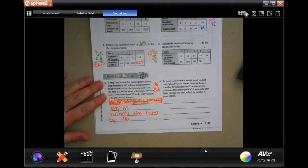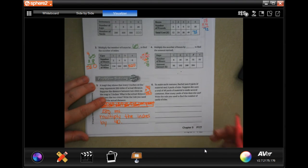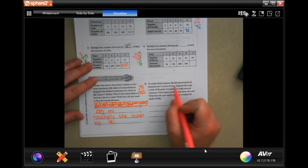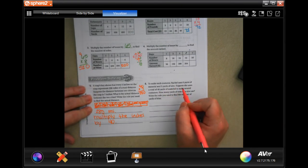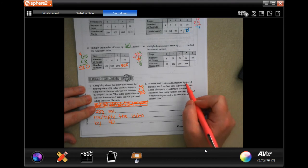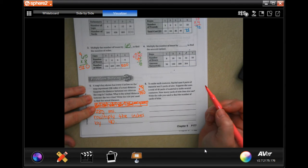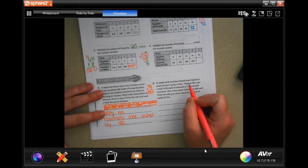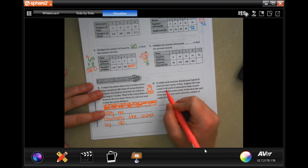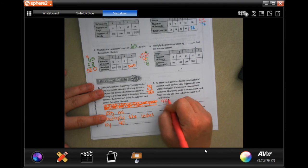Number six: to make a costume, Rachel uses six yards of material and three yards of trim. Suppose she uses 48 yards of material. To get from six to three, we've divided by two. So we're going to divide 48 by two. Well, 48 divided by two is 24.